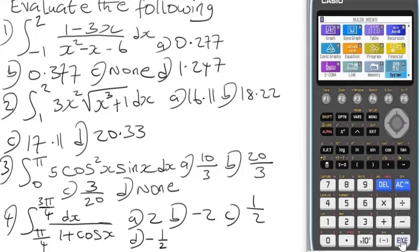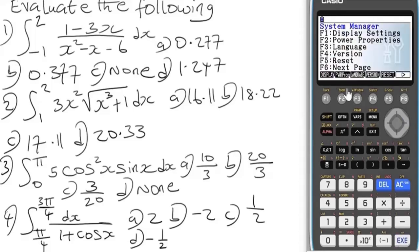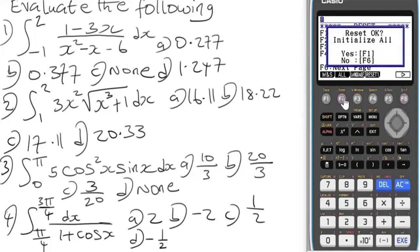Press the button where it says equals to, then press Reset, which is F5, then go to Next Page, that's F6, Initialize for F2, press F1 for Yes, and it will begin to initialize the calculator to put it in default mode. Let's wait for it to complete the process. Once it's done, we'll move to the next step.